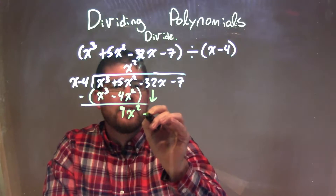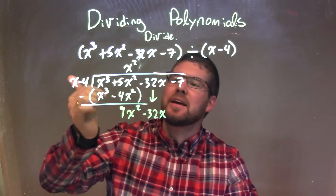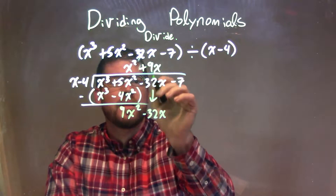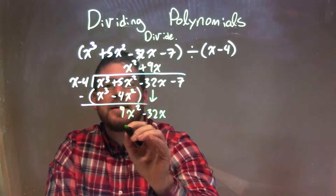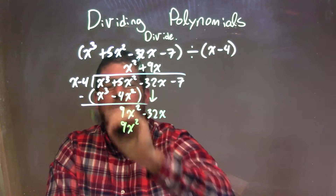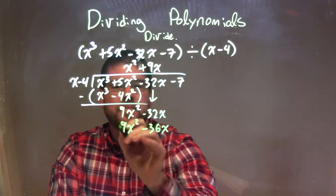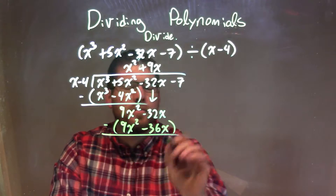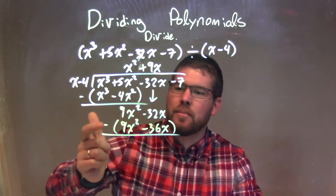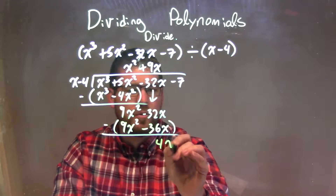I'm going to bring down the minus 32x. Same question again: what times x gives me 9x squared? And that's just 9x. So we have plus 9x right there. 9x times x is 9x squared, and 9x times minus 4 is minus 36x. Subtract the two right there. 9x squared minus 9x squared is 0. But negative 32x minus a negative 36x is like adding a positive 36x, which comes out to be a positive 4x.